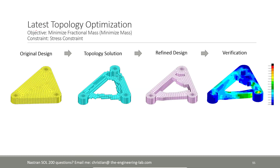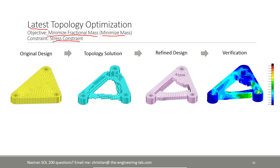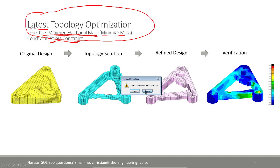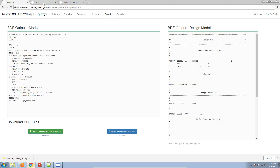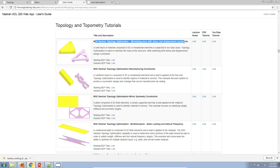There is another topology workflow — I'll call this the latest method, which is more intuitive. Here the objective is to minimize the fractional mass — we are actually minimizing the weight of the part. With this approach, you can impose a stress constraint, which you never see with the traditional approach. With the latest topology approach, you can set the objective to minimize weight and apply a stress constraint. For more information regarding this method, I refer you to the example in the user's guide: in the topology and topometry section, 'minimizing mass with stress and displacement constraints.'